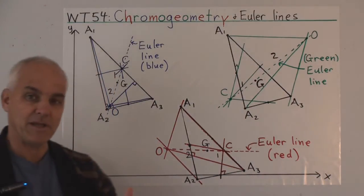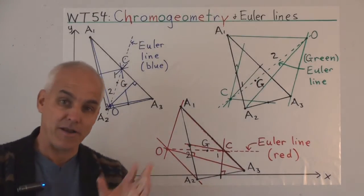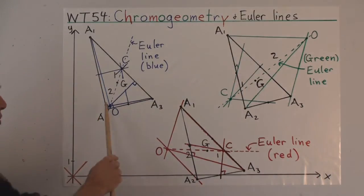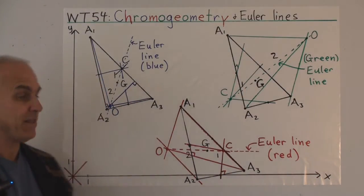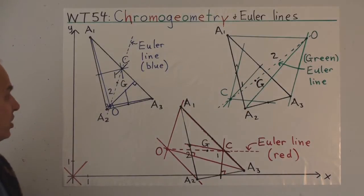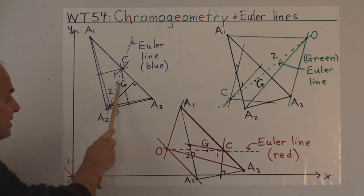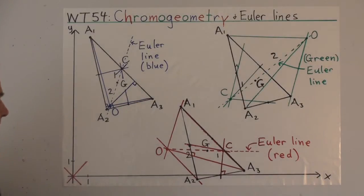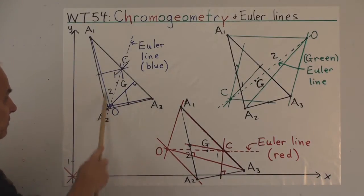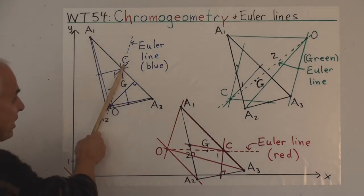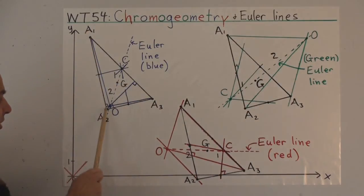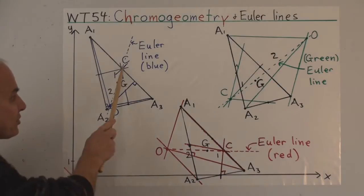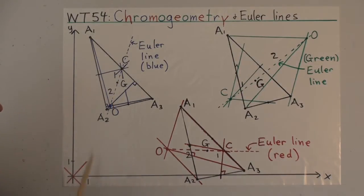I'll remind you first about some things we've talked about in an earlier series on triangle geometry. If you have an ordinary triangle A1, A2, A3 in the ordinary blue geometry setting of Euclidean geometry, then the orthocenter, the centroid, and the circumcenter all lie on a single line discovered by Euler, so it's called the Euler line. The orthocenter is the intersection of the three altitudes of the triangle. The centroid G is the intersection of the three medians, joining a vertex to the midpoint of the opposite side. And the circumcenter is the intersection of the three perpendicular bisectors emanating from the midpoints going perpendicularly to each of the sides.